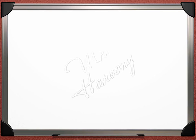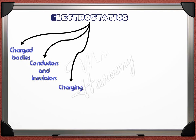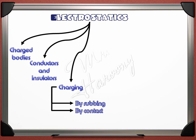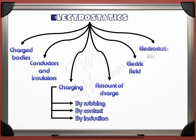Now let's review the main titles of this lecture on electrostatics. First, we studied charged bodies and the mechanism of the charging process. The second topic was conductors and insulators and the importance of earthing. After that, we studied charging by three methods: by rubbing, by contact, and by induction. We introduced the new physical quantity — the quantity of charge Q. Then we covered the electric field and how to draw some of them. Finally, we studied the electrostatic force between charges.